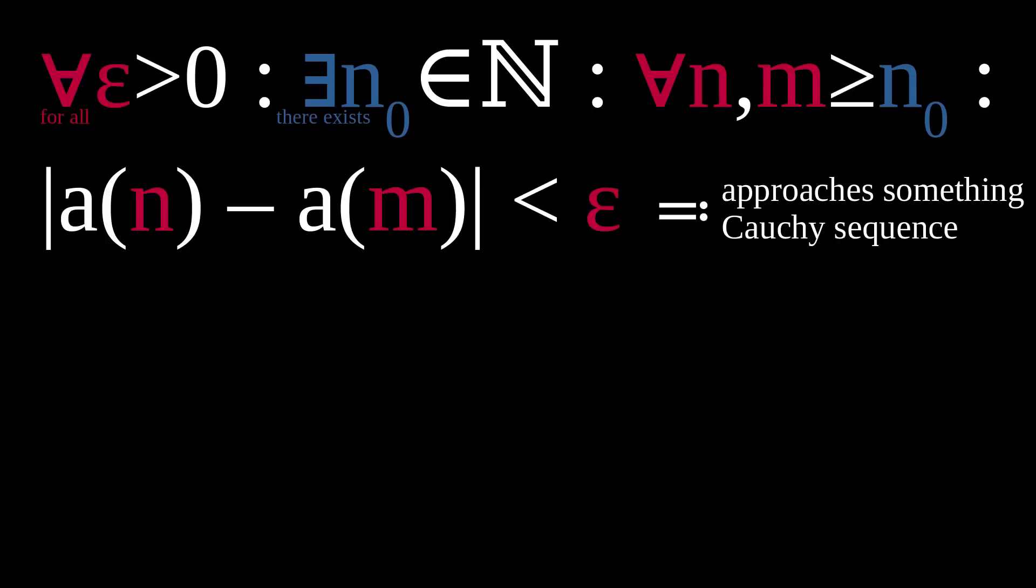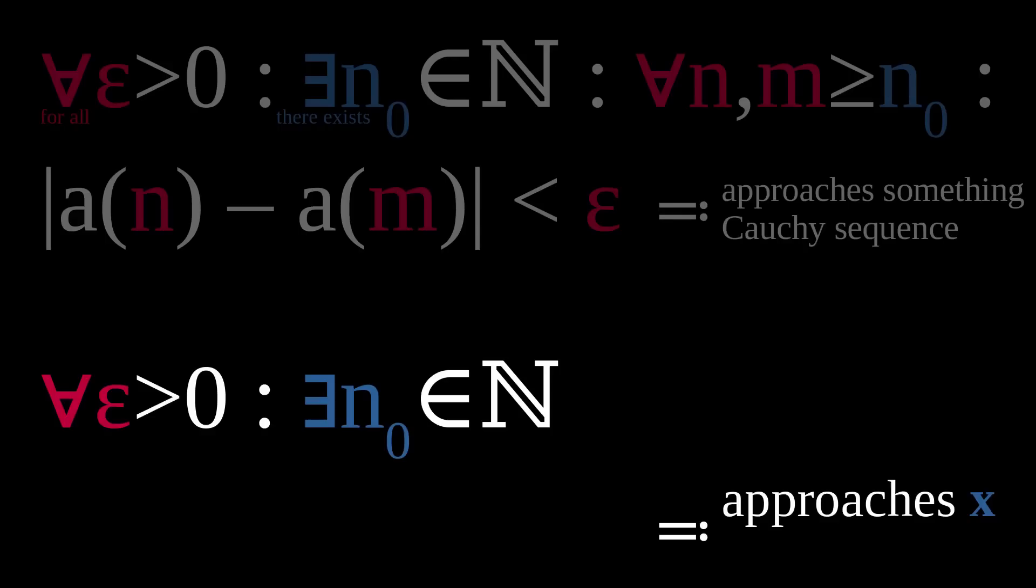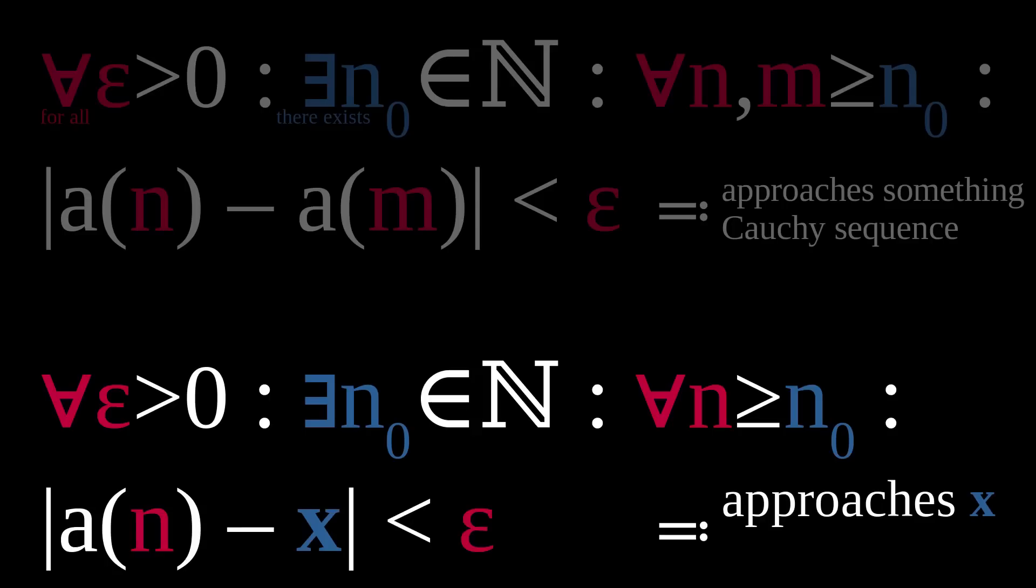Now, if I make an even stronger claim that I actually found a specific number x, such that the sequence approaches x, I have to prove the following. For any distance epsilon you throw at me, I can find a benchmark n0—that part is the same—such that for any number n above that benchmark, the distance between the sequence evaluated at that point n and my fixed number x is smaller than epsilon. In other words, the sequence gets arbitrarily close to x. If that's the case, we also say the sequence converges.